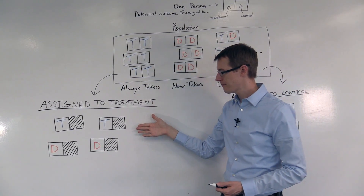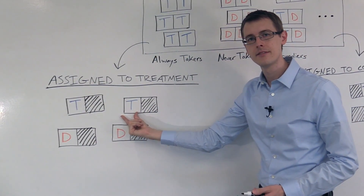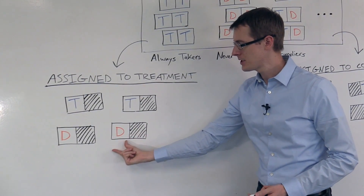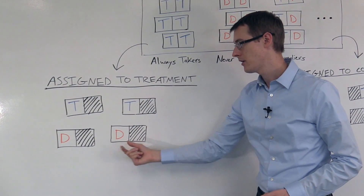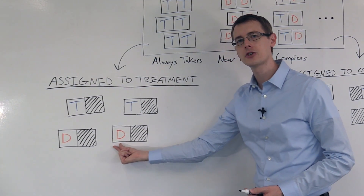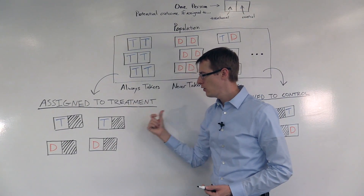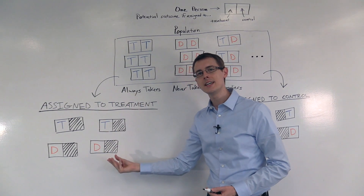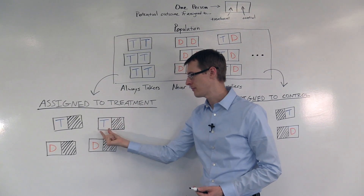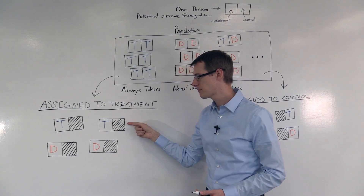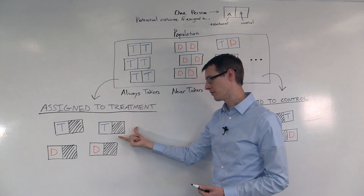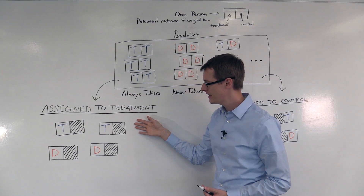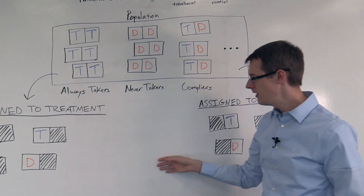Over here in the treatment group, this person gets treated, so they comply with their treatment assignment. They are put in the treatment group; we wanted them to get treated, and they did. This person does not comply with their treatment assignment — we put them in the treatment group, but they actually don't take the treatment. Just like in the control group, we only see one of the two sides of this box. We just see that when this person is assigned to the treatment group, they get treated. We don't see what would have happened to this person if they had been assigned to the control group. Now, we already saw that there's noncompliance in this example, because some people are assigned to get treated but they actually don't get treated.